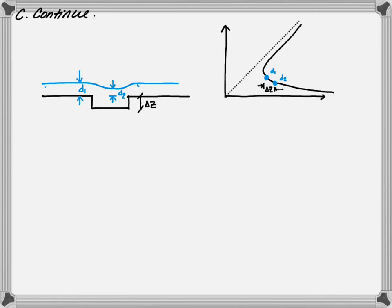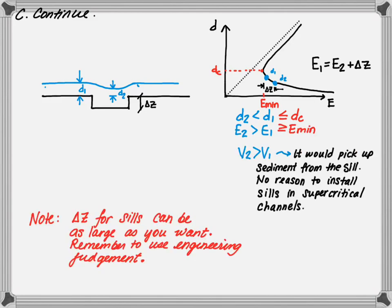A sill experiencing supercritical flow follows the same equation where E1 equals E2 plus delta z. Realize that d2 must be less than d1, which is less than or equal to dc. The energy at point two is much greater than at point one, which is greater than or equal to the minimum energy. The velocity at point two is greater than the velocity at point one, meaning it would pick up sediment from the sill — so there is really no reason to install a sill in a supercritical channel. Note that delta z for a sill can be as large as you want, but use engineering judgment when designing a sediment sill.